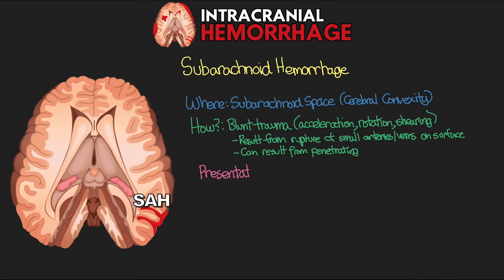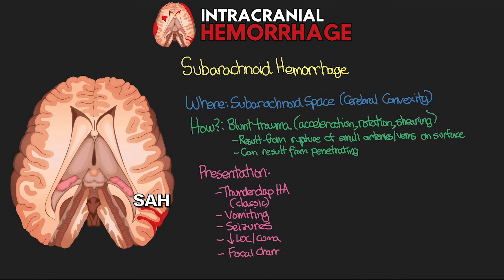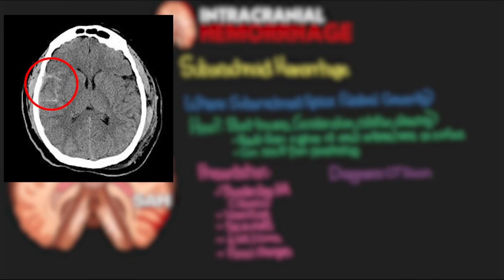A classic sign of subarachnoid hemorrhage is the thunderclap headache — essentially the worst headache someone has ever had. Patients can also have vomiting, seizures, decreased level of consciousness, possibly even coma, and focal changes based on where the bleed is impacting. On CT scan we see focal high-density areas particularly in the sulci and fissures of the brain.